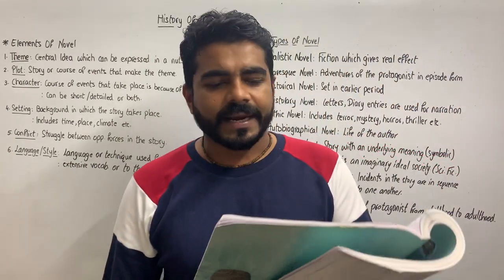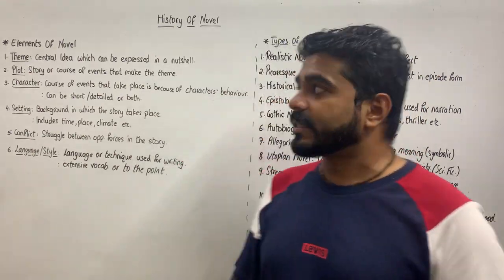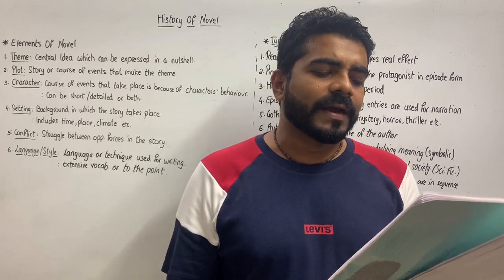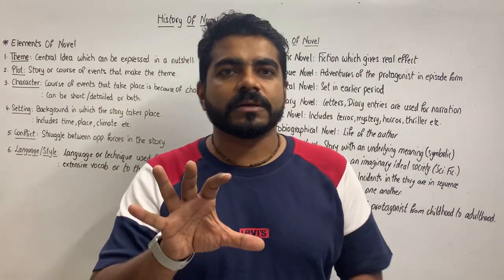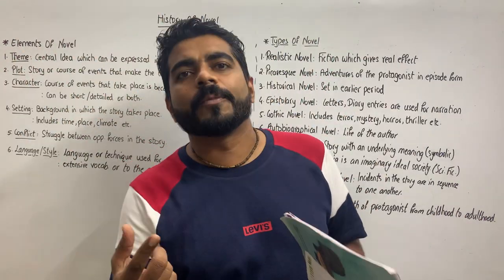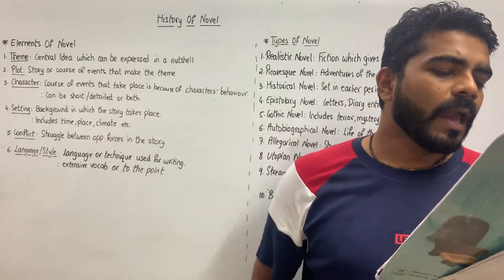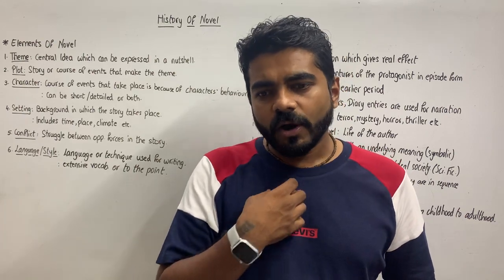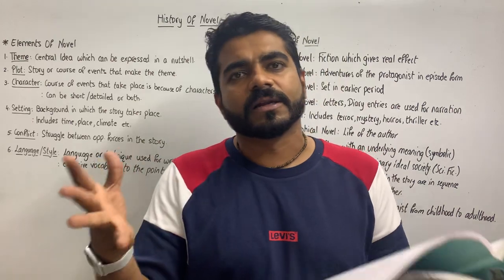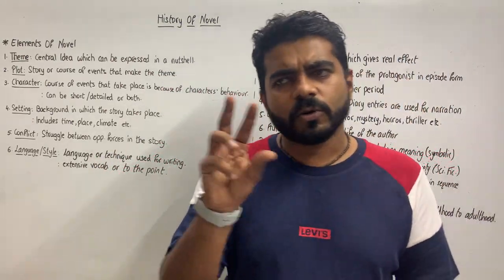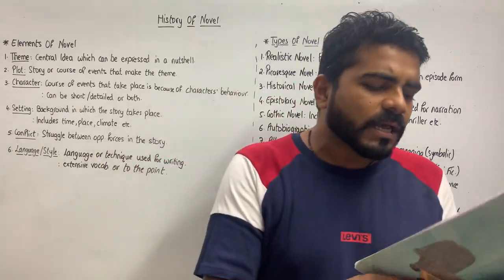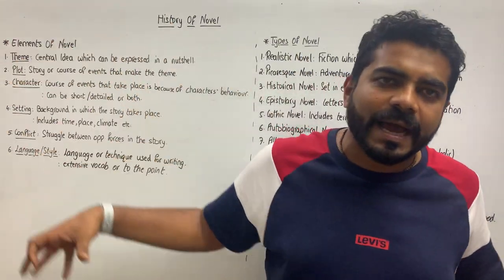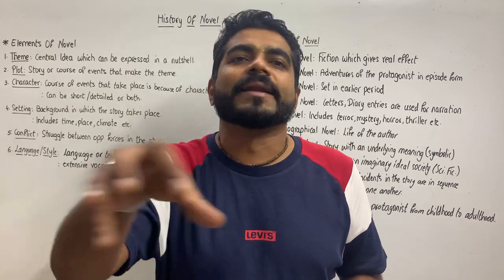Next is the plot. Plot is essentially the story or the course of events that make up the theme — the main storyline. It is created by conflict, either internal (inside the mind of the character) or external (with other characters). Plot may be simple, with one storyline and two or three supporting characters, or complex, consisting of interweaving of many sub-plots all tied together by a commonality.